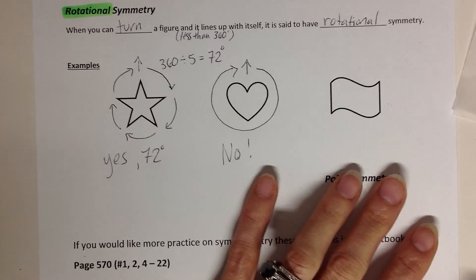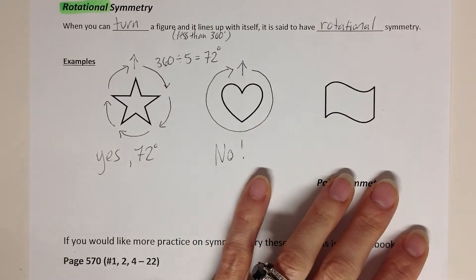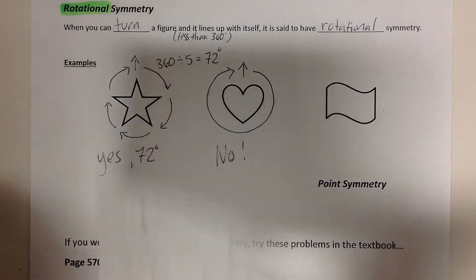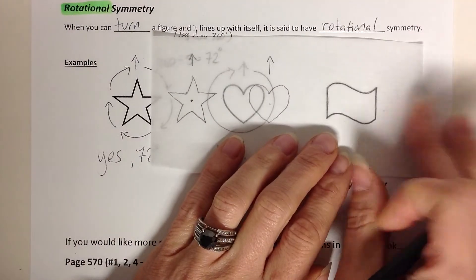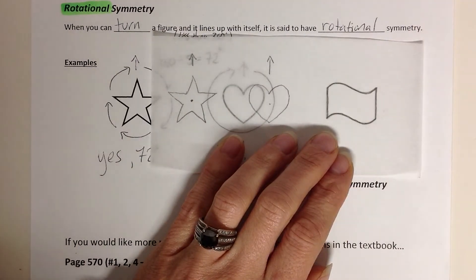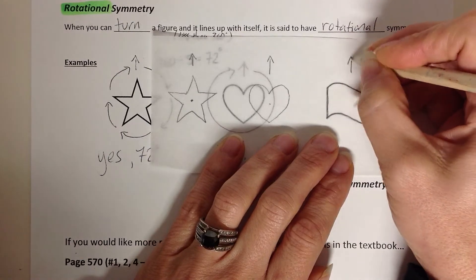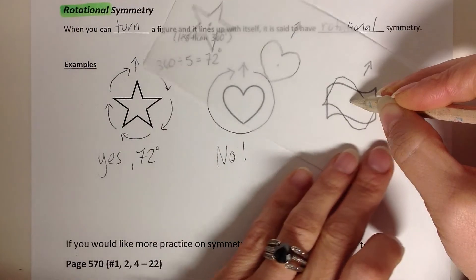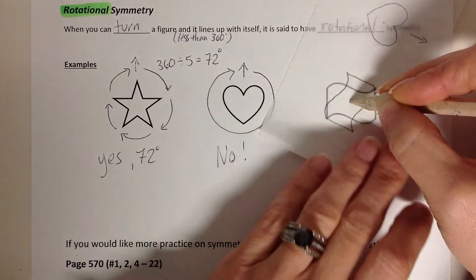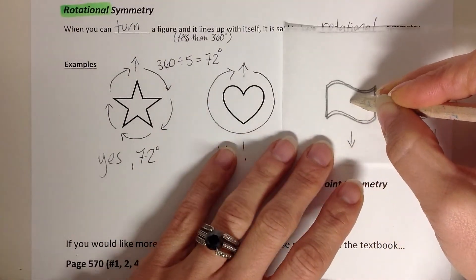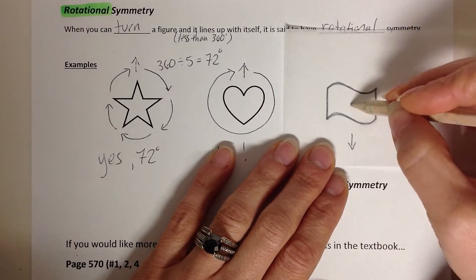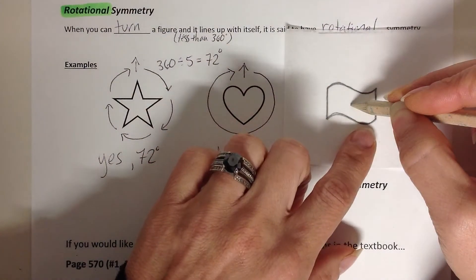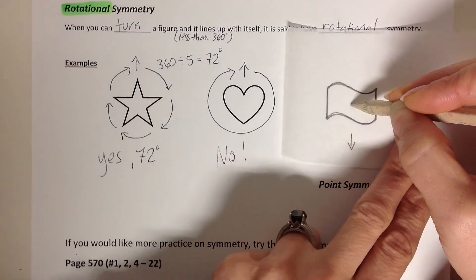All right, think about the flag. All right, I'm going to use my arrow. People commonly say no on this one, so I'm going to show you that actually, just like a rectangle, it is a yes. Upside down, it lands on itself. Okay, I have not gone 360 degrees. Those curves, they flip-flop. Okay, they're going to be 180 degrees on the other side.